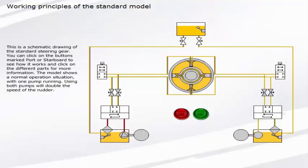This is a schematic drawing of the standard steering gear. You can click on the buttons marked Port or Starboard to see how it works, and click on the different parts for more information. The model shows a normal operation situation with one pump running. Using both pumps will double the speed of the rudder.